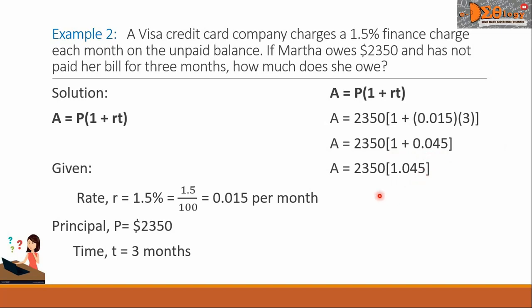Using our calculator, we will take the product of 2,350, times 1.045. Our answer is 2,455.75.